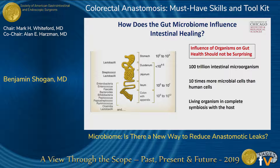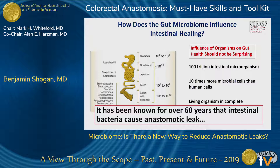It should not be surprising that intestinal organisms somehow interact with intestinal tissue. There are 100 trillion intestinal organisms — 10 times more microbial cells than human cells — and we really think about the microbiome interacting with the host in a very symbiotic relationship. We need the bugs as much as the bugs need us. And although it's been exciting over the last five to ten years, it's really been known way longer than that, that intestinal bacteria cause anastomotic leak.